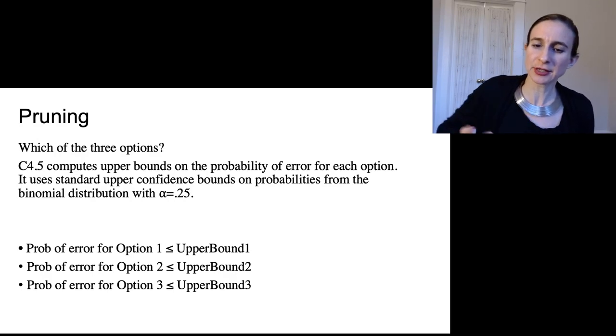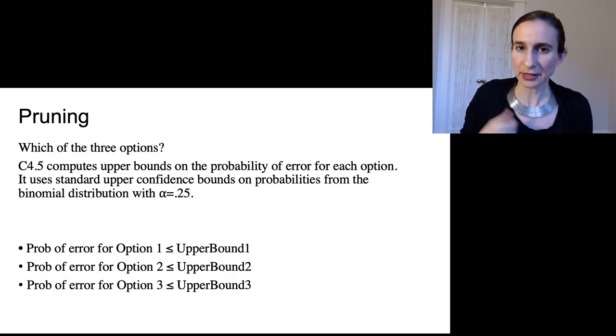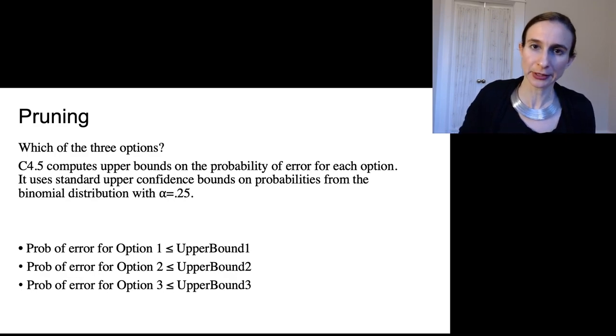It's because each data point is considered an independent draw. And each data point has a yes or no associated with it. So these are like Bernoulli random variables. And as we know, the binomial random variable is like a sum of Bernoullis, right? So that's why we're considering the binomial distribution. And then they use alpha equals 0.25 for the upper confidence bound.